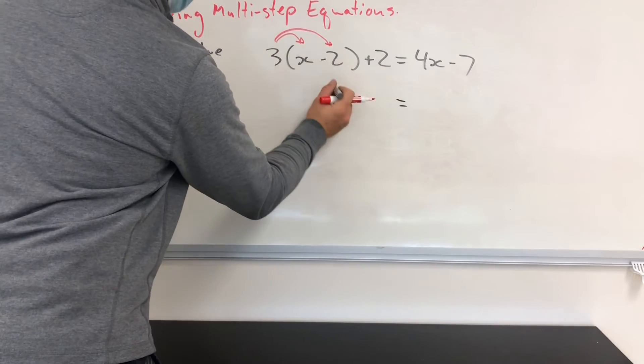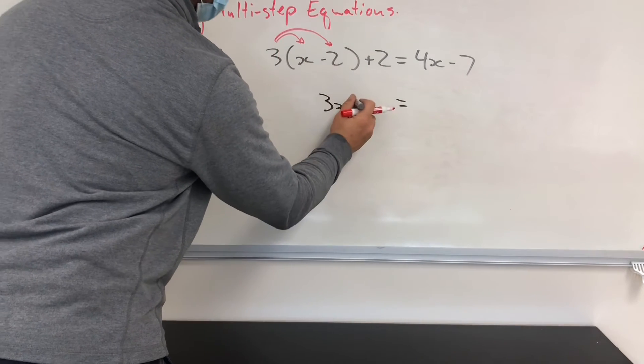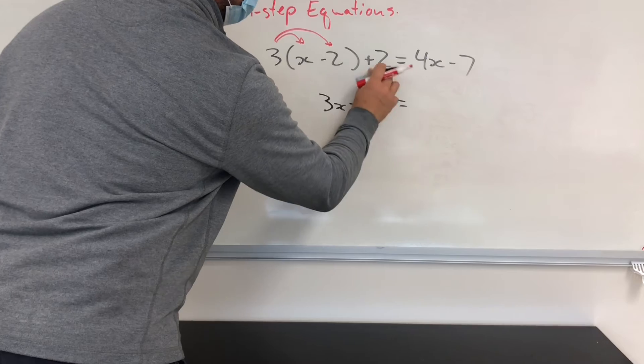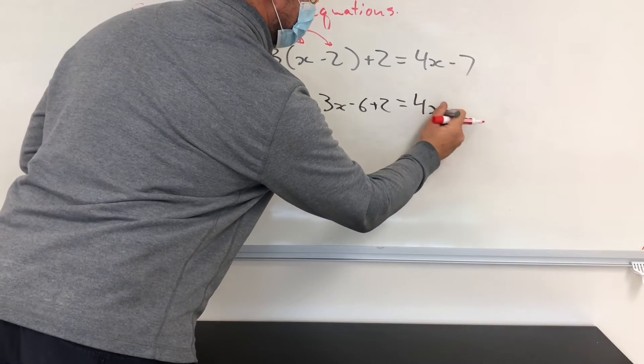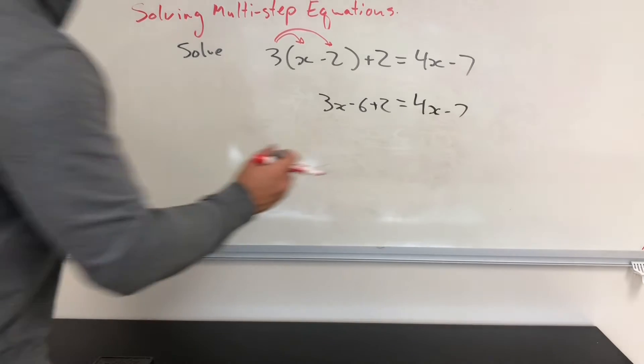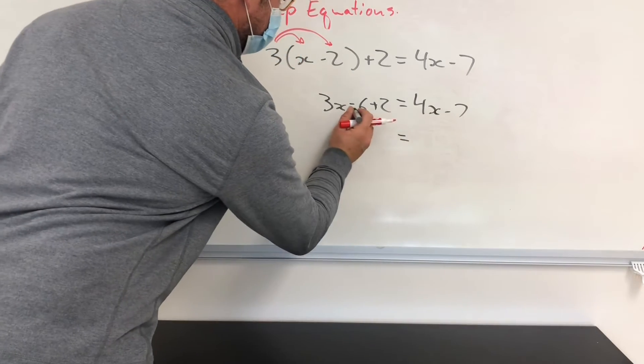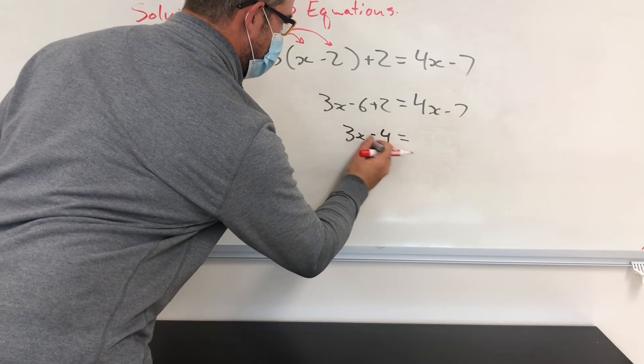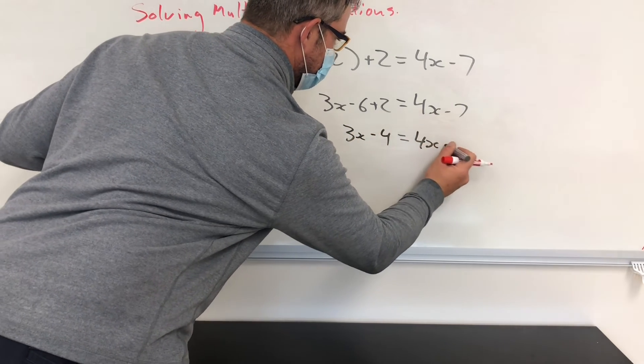So 3 times x is 3x. 3 times negative 2 is negative 6. Then I still haven't done anything with this plus 2. And I also haven't done anything with the right-hand side of the equation. Now I'll simplify a little bit further here. Minus 6 plus 2 is minus 4. So I have 3x minus 4 is equal to 4x minus 7.